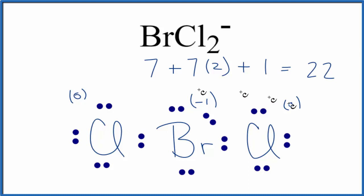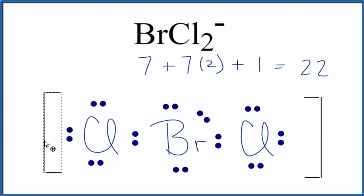So this is the best Lewis structure for BrCl2-. We should also put brackets around it to show that it's an ion, and then add the negative charge. Put our negative charge up here. And that's the Lewis structure for BrCl2-.